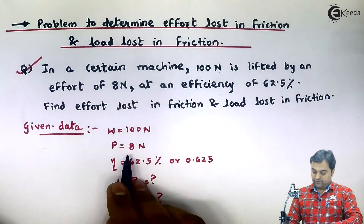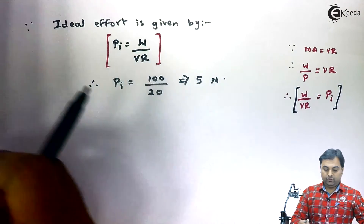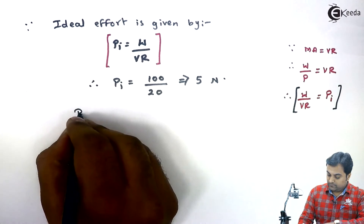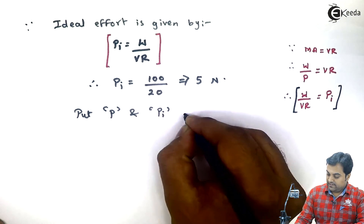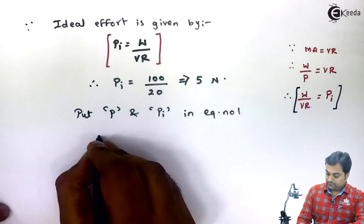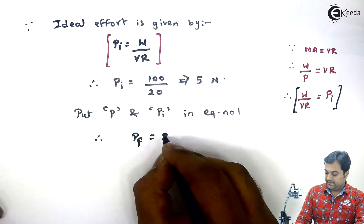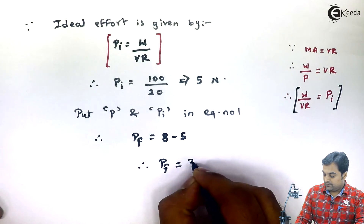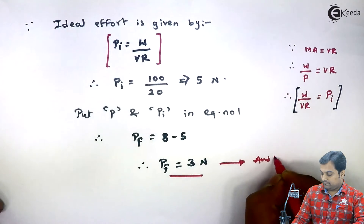Now actual effort is given and ideal effort has been calculated, so we can put all values into equation number one to get effort lost in friction. Therefore effort lost in friction = P minus P_I = 8 minus 5 = 3 Newton. So this is our first answer: effort lost in friction is 3 Newton.